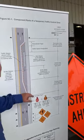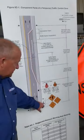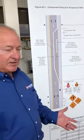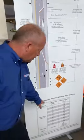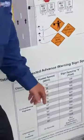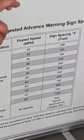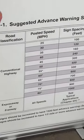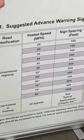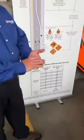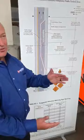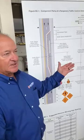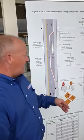The distance between the signs is based on speed limit. It's usually the speed limit times four to eight feet. So if it's 30 mph, a minimum of 120 feet apart — basically it's easy math.